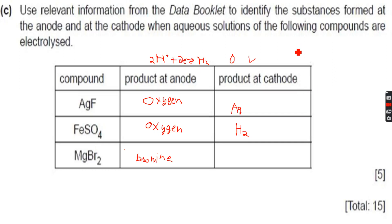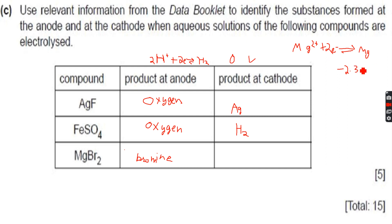In the case of MgBr₂, we have the half equation: Mg²⁺ + 2e⁻ → Mg. The electrode potential is -2.38 volts. You can see that H⁺ ions have a stronger drive to form H₂ compared to Mg²⁺ ions to form Mg, so H₂ will be formed.